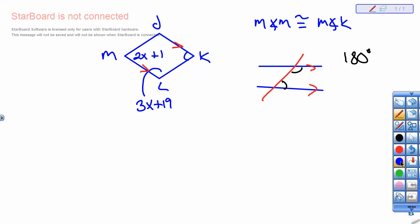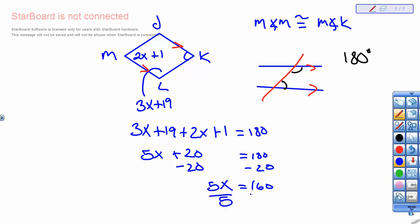So we'll add those up. So we'll say 3x plus 19 plus 2x plus 1 is equal to 180. Combined like terms gives us 5x plus 20 is equal to 180, minus 20, minus 20, and we have 5x is equal to 160. So we divide both sides by 5, divide by 5, and we get x is equal to 32.